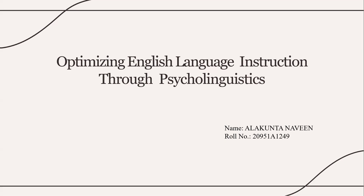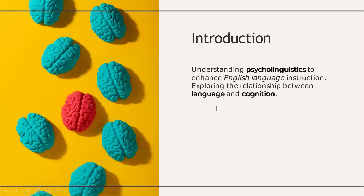Hi, this is Alakunta Mabin, Rural number partner, and my topic is about optimizing English language instruction through psycholinguistics. Introduction: understanding psycholinguistics to enhance English language instruction, exploring the relationship between language and cognition.